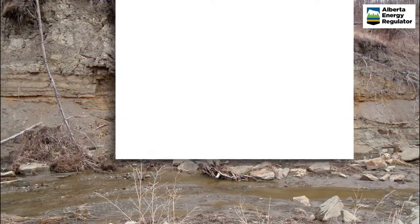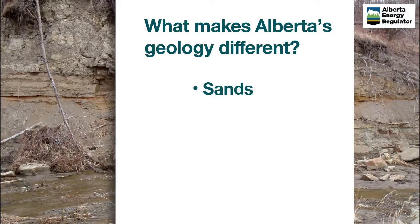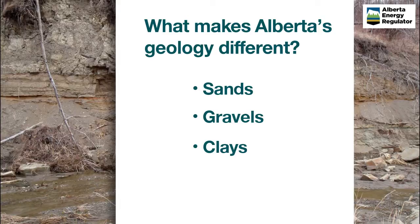Beginning at the surface, soil sits atop surficial deposits across most of Alberta. Surficial deposits are the loose sands, gravels, and clays left behind by glaciers, rivers, or ancient lake beds. They are important sources of sand and gravel, and in some areas can contain aquifers with usable water. These deposits sit on hard rock called bedrock. From the top of the bedrock down, most rock layers, known as formations, are capable of containing some amount of natural gas or oil.